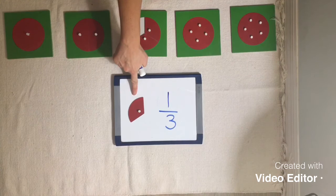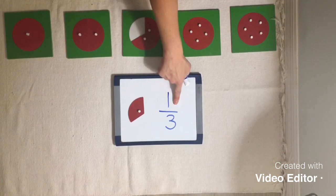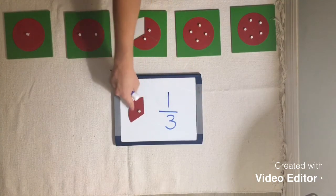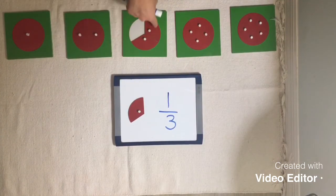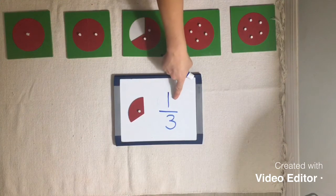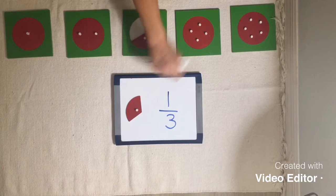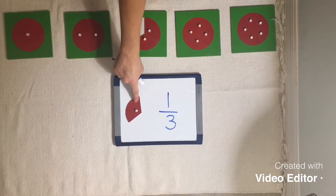This is one third. This says one third. We have a three as the denominator because this is a fraction that has one, two, three equal parts. We have a one as the numerator because we are only looking at one of those three parts right now. One third.